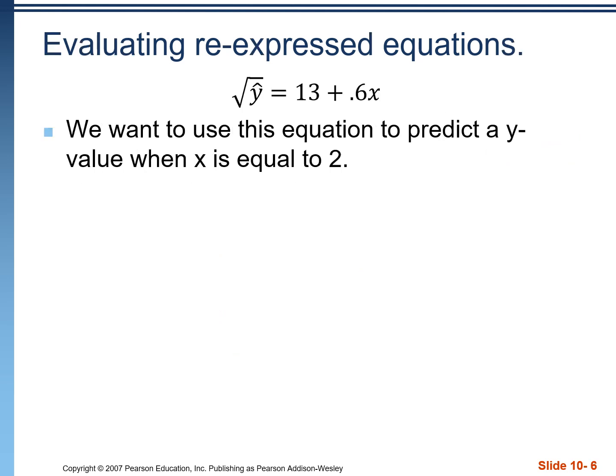When it comes to plugging into this equation, we start off the same as normal. We want to use the equation to predict the Y value when X is equal to two. So we're just going to plug in a two for the X. That's going to give us the square root of Y hat equals 14.2. Now, this is still in re-expressed form. So if we want to get an actual predicted value for Y hat, we want to get that Y hat by itself, which means we need to reverse the re-expression. So we would square both sides. That would give us Y hat an actual predicted value of 201.64, which is just the 14.2 squared.